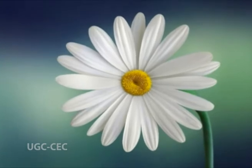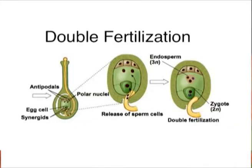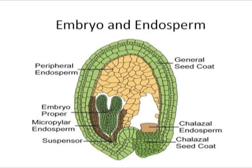In an angiosperm flower, the endosperm and the embryo develop after fertilization. During fertilization, two haploid male cells are released to the embryo sac. One fuses with the egg cell to form a diploid zygote, and the other fuses with two polar nuclei to form a triploid cell. The zygote develops into an embryo and the triploid cell forms the endosperm.